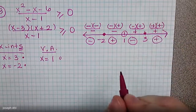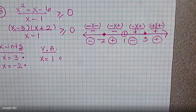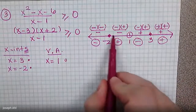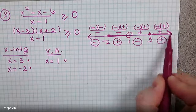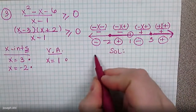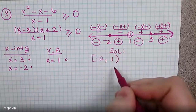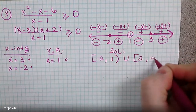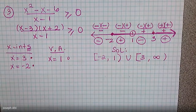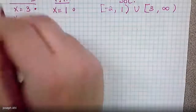Test two between one and three: two minus three is negative, two plus two is positive — top is negative; two minus one is positive — negative over positive is negative. Test four to the right: all three factors are positive, so the result is positive. The signs alternate as expected. We want greater than or equal to zero, so shade the positive regions: from negative two to one, and from three to infinity. Solution: bracket negative two to one parenthesis, union bracket three to infinity.